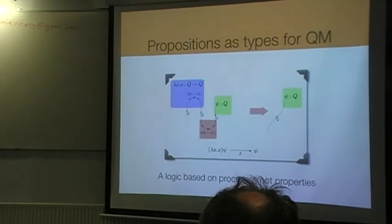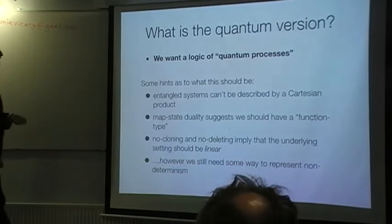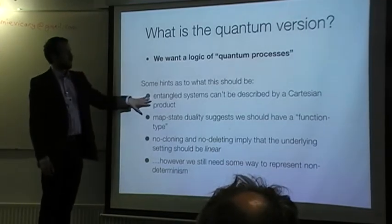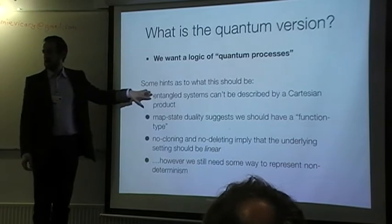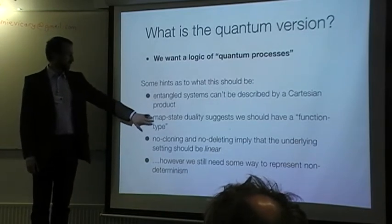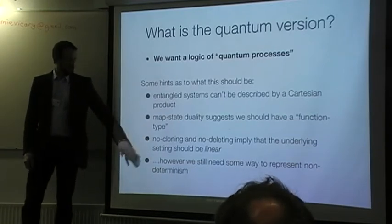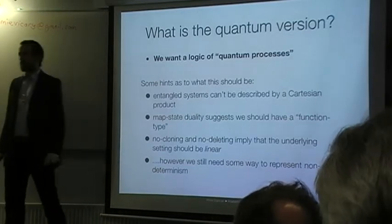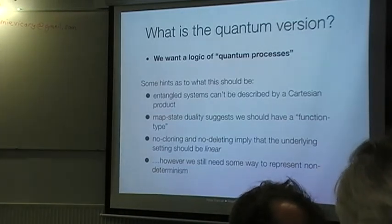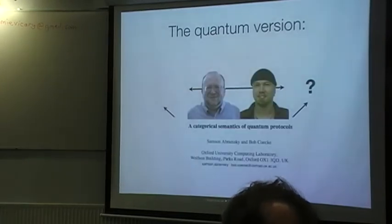Okay. So here is a first attempt at it. You don't want to have Cartesian product because entangled states can't be decomposed. You want to have par instead of function type because of state duality. You think your general state setting will be linear because there's no cloning, no deleting, and somehow you're going to talk about non-triviality. So, again, in the year 2004, this corner got built in by these guys.